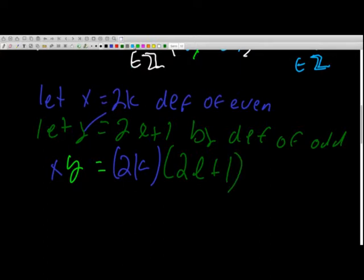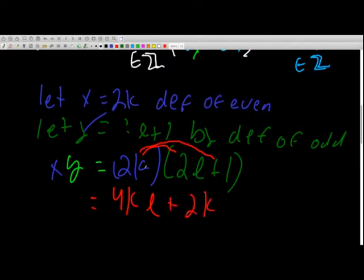And now let's distribute that out. I'm going to pick another color. And that whole thing is going to be equal to - so we're going to multiply the first term and the last term and the last term times this number here. So that's going to be 2k... sorry, 4kl... 4kl plus 2k.